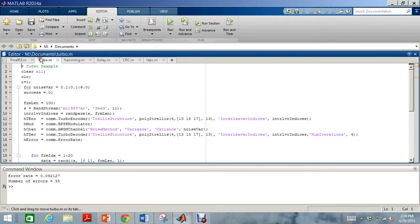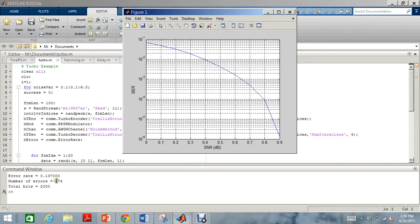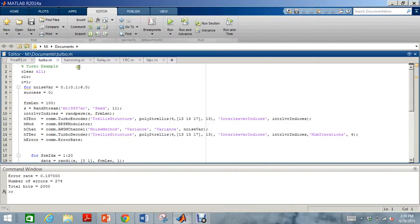Now moving on to turbo codes. As you will see turbo codes are a little more complex and take a little more time than the RS codes to compute. The number of errors are 274 which were rectified and the error rate is 0.13. This is the BER versus SNR graph for the turbo code.